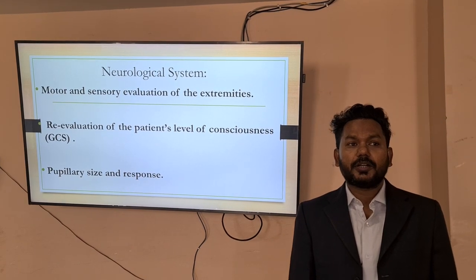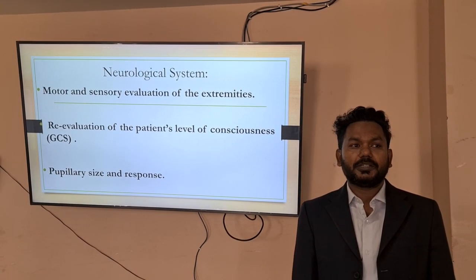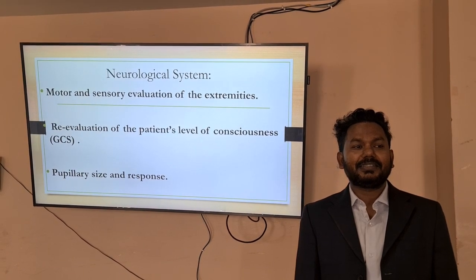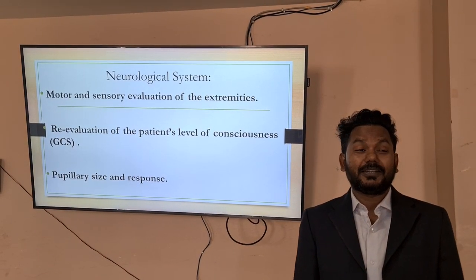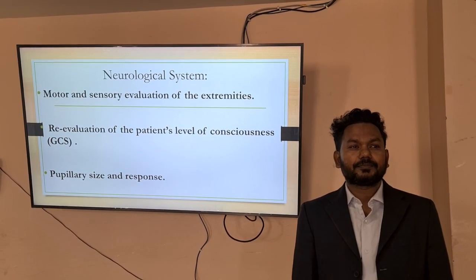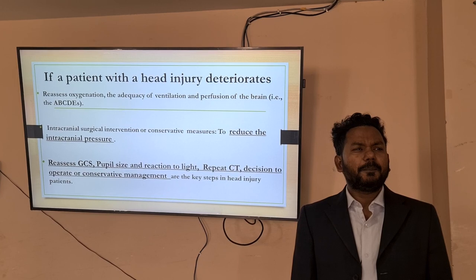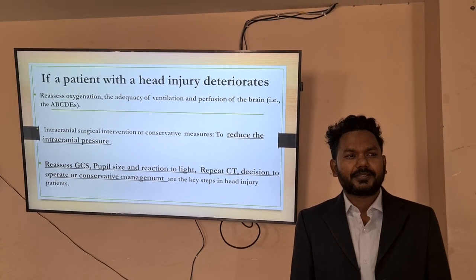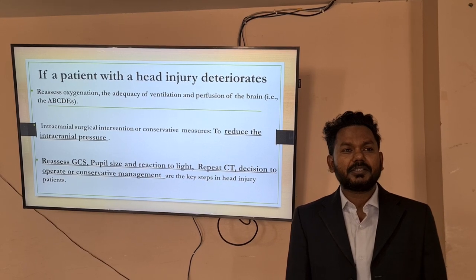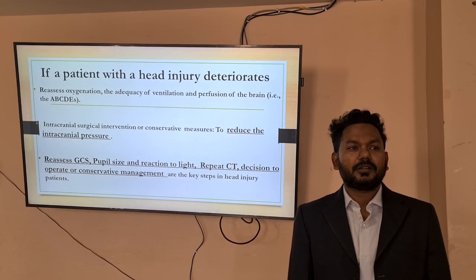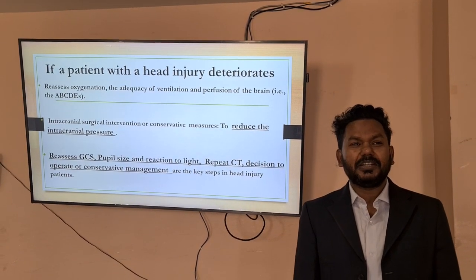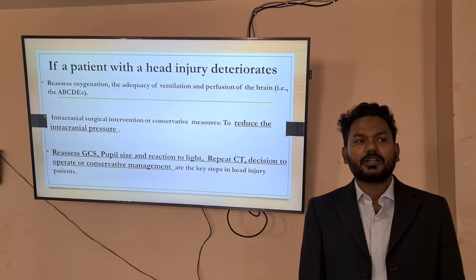Under the neurological system, motor and sensory evaluation of the extremities should be done. Re-evaluation of the patient's level of consciousness including GCS should be performed, along with checking pupil size and response to light. If a patient with a head injury deteriorates, please reassess oxygenation, the adequacy of ventilation, and perfusion of the brain. Consider whether intracranial surgical intervention or conservative measures should be continued to reduce intracranial pressure.